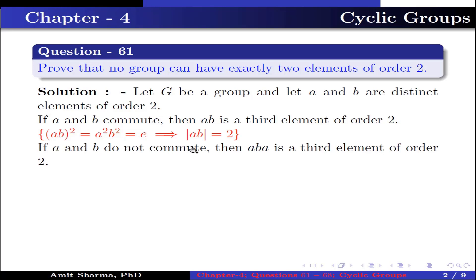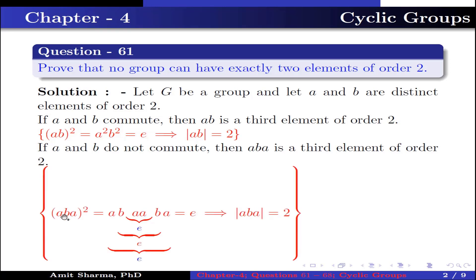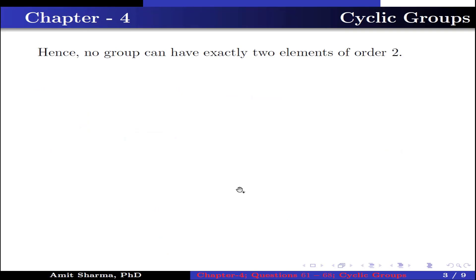If A and B do not commute, then ABA is the third element of order 2, because (ABA)² = ABA·ABA. Since A² = identity and B² = identity and A² = identity, this whole expression equals identity, so the order of ABA is 2. Hence no group can have exactly two elements of order 2.